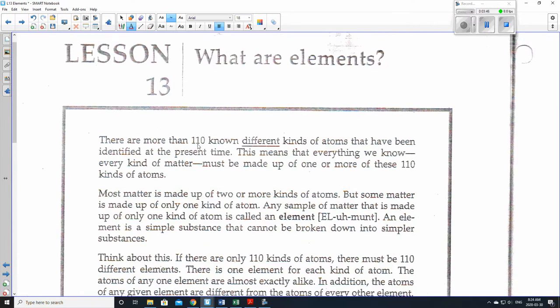So what are elements? There are more than 110 known different kinds of atoms that have been identified at the present time. So actually the real number right now, because this is older, it's actually 118. Because this is an older handout, but I love these handouts because they're so clear and easier for students to use.